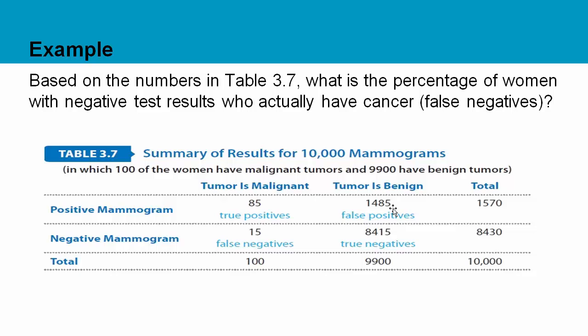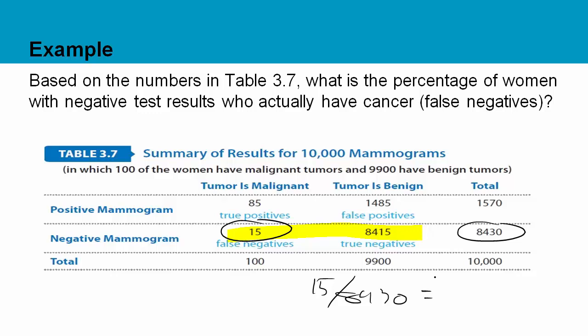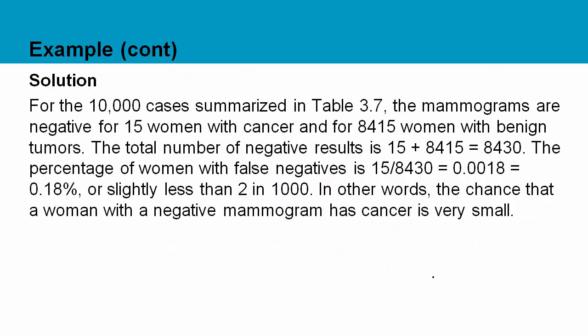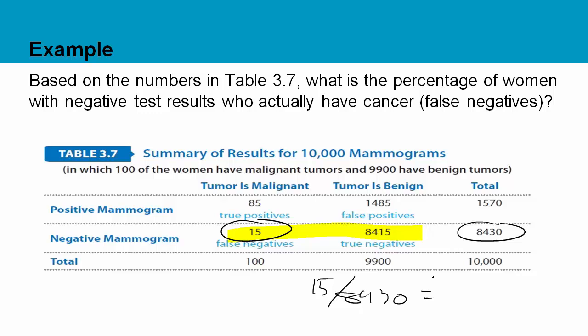This is actually real-world stuff. This actually happens, which is why any time they run important tests like mammograms and HIV tests, they will run them twice to help catch these mistakes. Based on the numbers, what is the percentage of women with negative test results who actually have cancer? Women with negative test results are all of these people. How many of them actually have cancer? Just these. So it is 15 out of the total of 8,430, and that gives you your answer. When we do the math we can see it's 0.18% — not 18%, but 0.18%, less than 1%. The chance that a woman with a negative mammogram actually has cancer is very small. Only 15 out of 8,430 got the wrong result — when it said you don't have cancer, they actually had it.